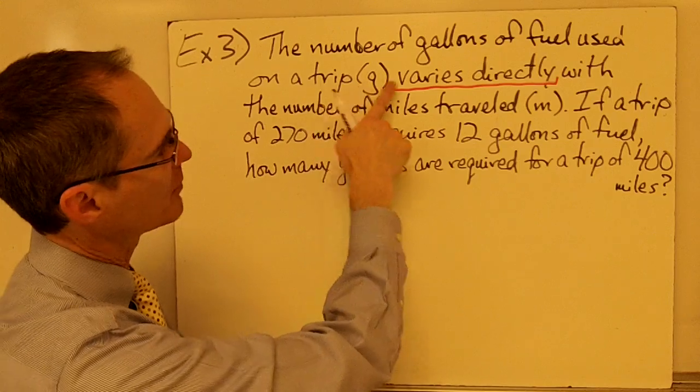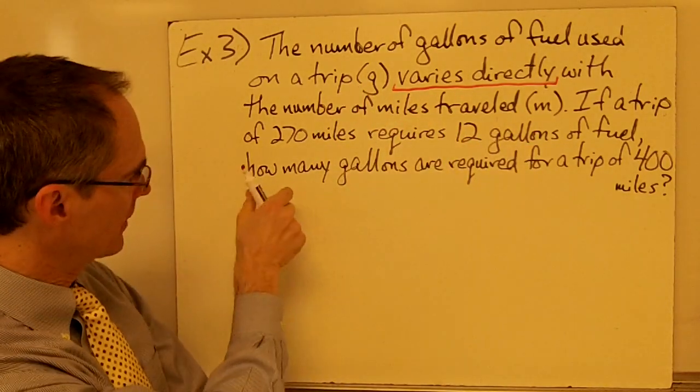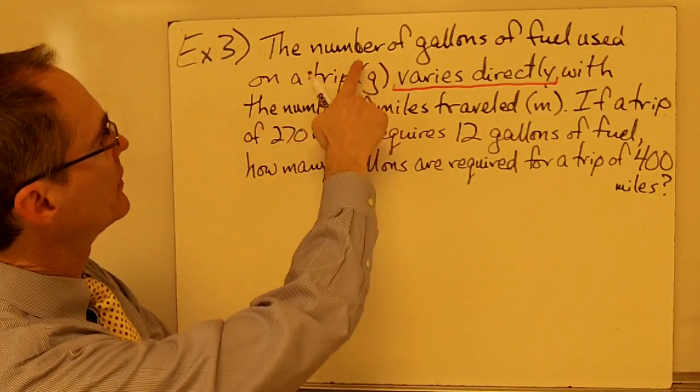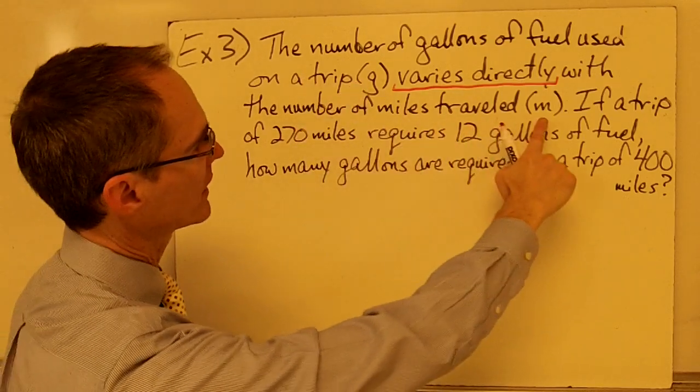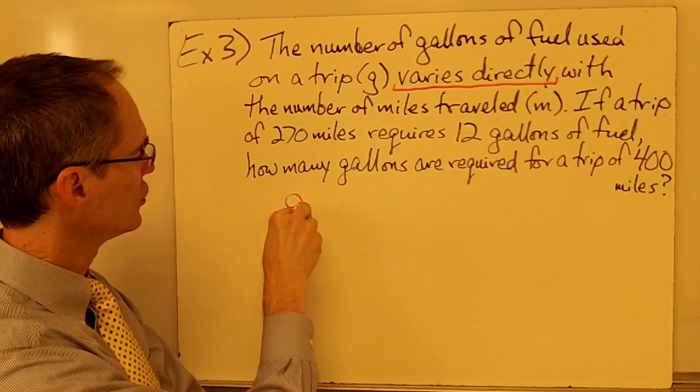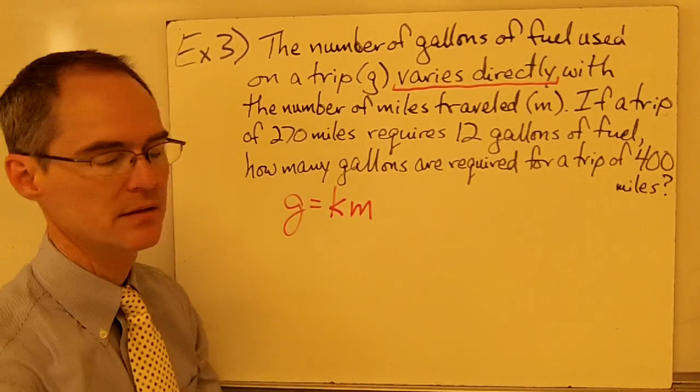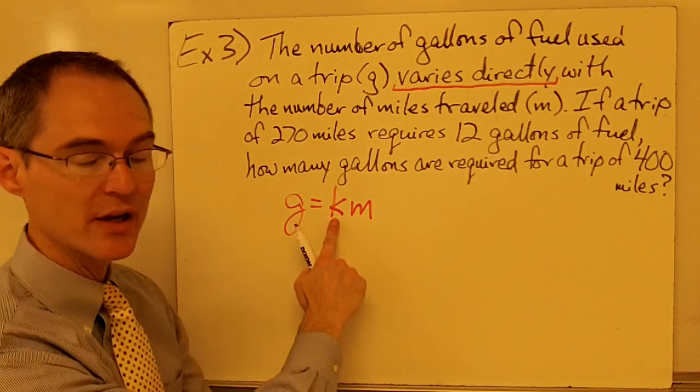Now, instead of using x and y, I'm going to be using g and m. But I'm still going to write my original equation here the same way. So, the number of gallons varies directly with the number of miles traveled. g varies directly with m. g equals k times m.